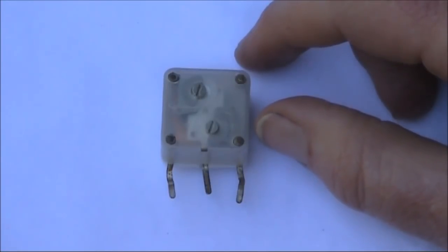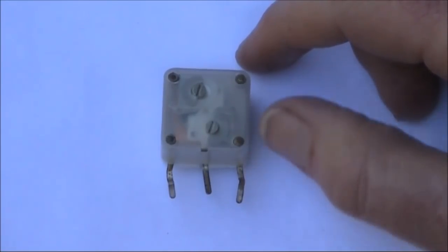There's actually four variable capacitors: the main gangs, as well as the two trimmers on the back.